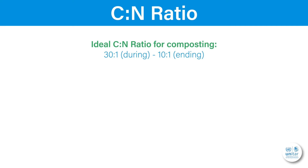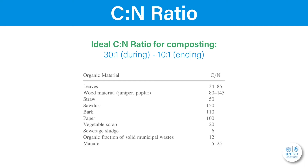The CN ratio of finished compost is typically around 10 to 1. Here are some examples of CN ratios of different waste materials. As you can see, some materials are suitable; other materials however do not have suitable CN ratio ranges. Make sure that you can nevertheless compost them by mixing with other waste material to obtain a suitable final CN ratio.